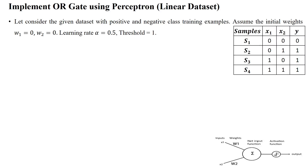Hello everyone, welcome to the perceptron learning rule second example: the OR gate to be implemented using the perceptron learning rule. First we have to check the given data set. The OR gate data is here with respect to two inputs x1 and x2, both acting as features in machine learning, and this is the target output.